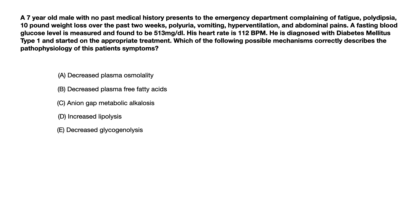A fasting blood glucose level is measured and found to be 513 milligrams per deciliter. His heart rate is 112. He's diagnosed with diabetes mellitus type 1 and started on the appropriate treatment. Which of the following possible mechanisms correctly describes the pathophysiology of this patient's symptoms?